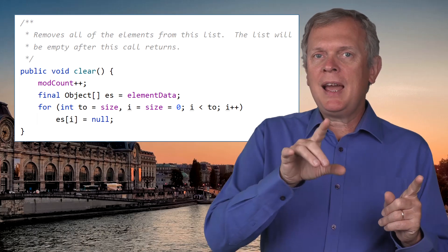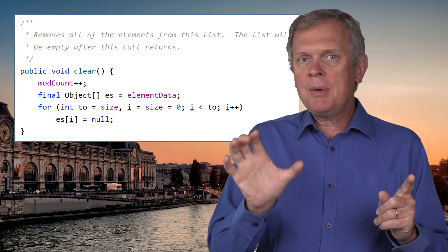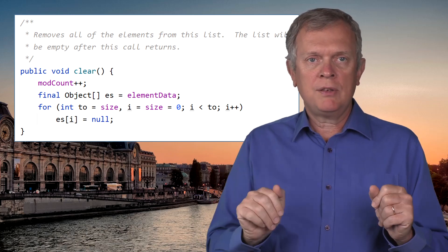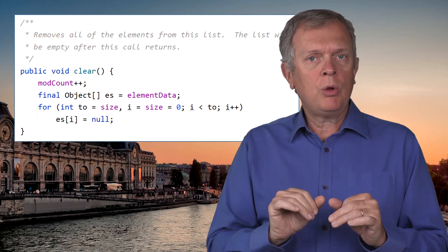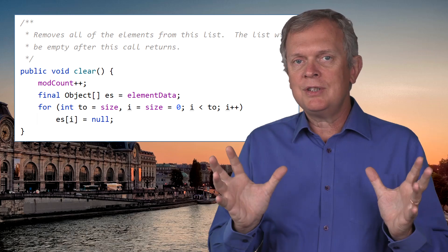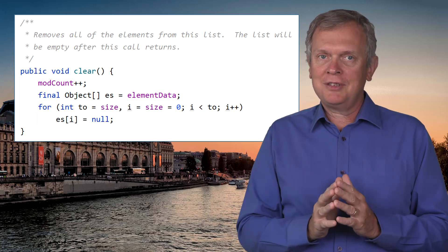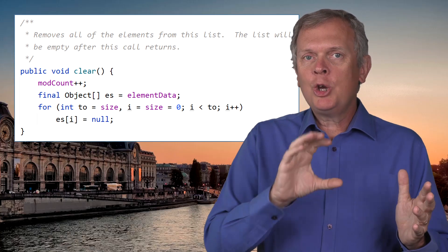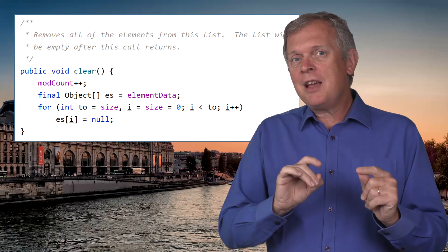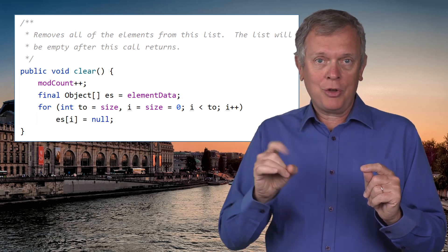Second step: you copy elementData to a local variable of the clear method. ElementData is the reference to the internal array of this ArrayList object. This reference is mutable, so that's the second race condition because it is not thread safe either. You may be copying an out-of-date reference and then operate on it. And the third step is this for loop where you iterate over this array to put null values in it. Well, this size field is also mutable, also not thread safe, so that makes a third race condition.